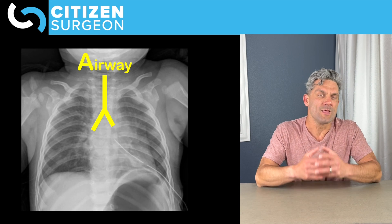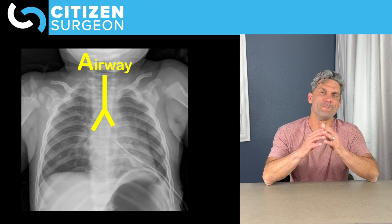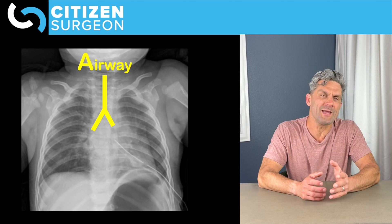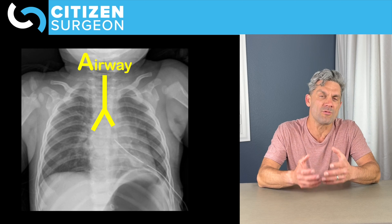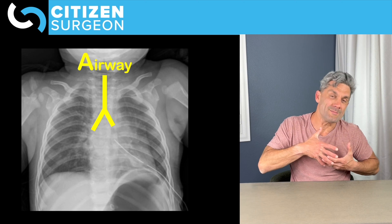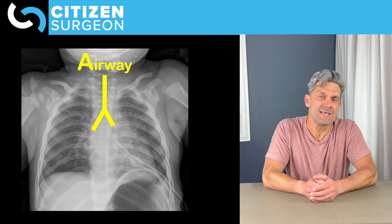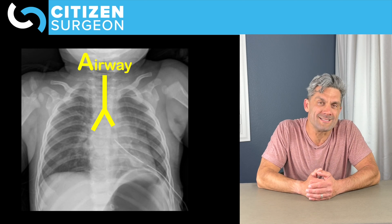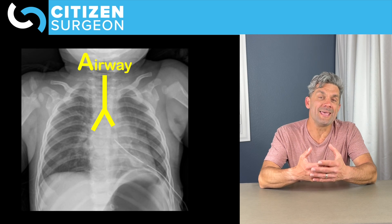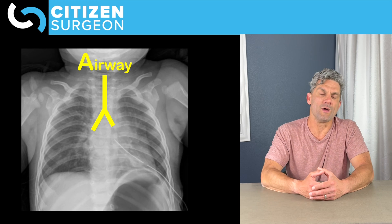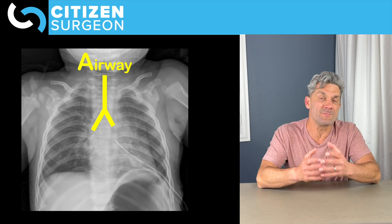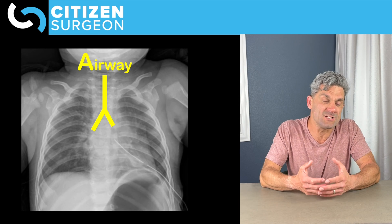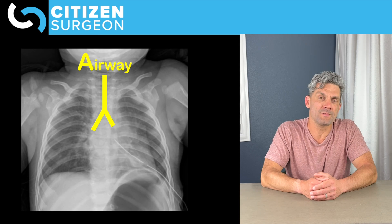A is airway. You can see this right here — we're outlining the trachea and the main stem bronchi. What am I looking for? I'm gonna look to see if that trachea is shifted. If we have a tension pneumothorax, it's gonna be shifted away, pushed across the mediastinum. If I have a lung collapse, it'll be pulled towards that side — so a right lung collapse, the trachea might be pulled towards the right. I may also look for foreign bodies in the airway, especially in that right main stem bronchus. Other things: is there increased tissue edema around the airway, or is the airway narrowed? That's A.